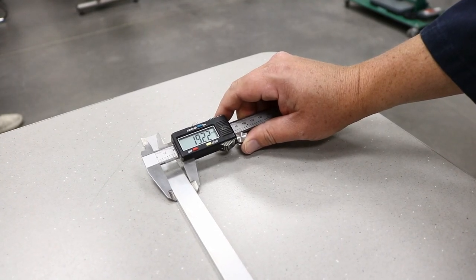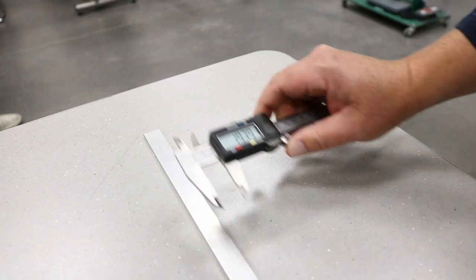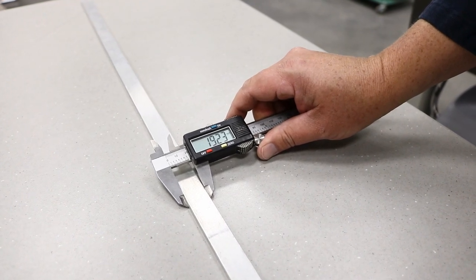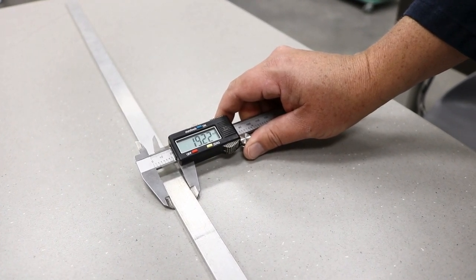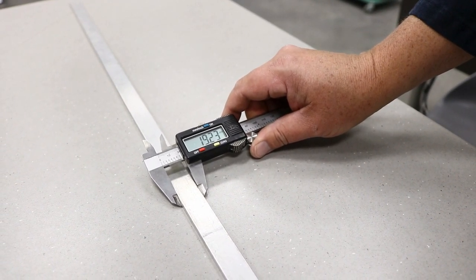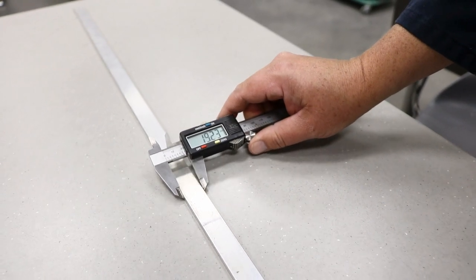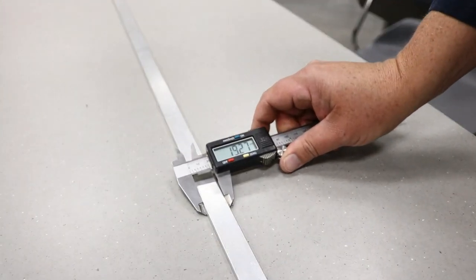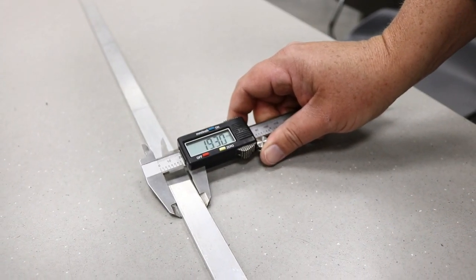To begin this part of the lab, first remove the column from the test apparatus and measure its cross-section dimensions. You will record the average of these measurements in Table 1 of Section 11.3. Measure the dimensions at at least three locations along the length. Use an electronic caliper for this.